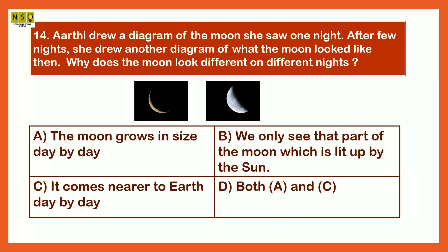Aarti drew a diagram of the moon she saw one night. After few nights, she drew another diagram of what the moon looked like then. Why does the moon look different on different nights? The options are: the moon grows in size day by day, we only see that part of the moon which is lit up by the sun, it comes nearer to earth day by day, option D both A and C.